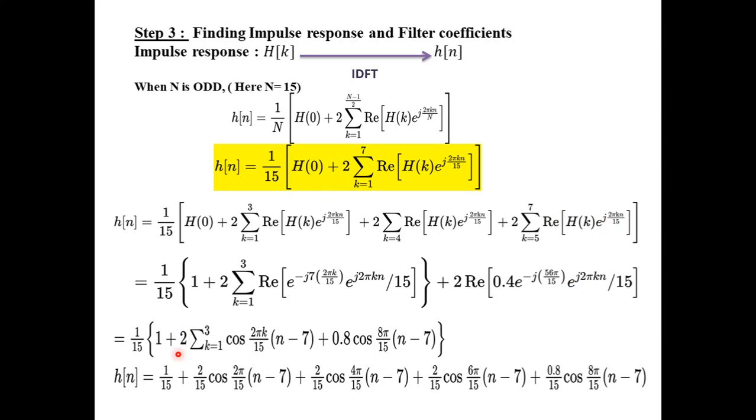Now, 1 by 15, 2, k equal to 1 to 3. So this can be written as, you can take n minus 7 as common over here, and the 2πk by 15 into n minus 7 will be taken. A real part of that is nothing but cos. And similarly, 0.4 e power j, you can take 8π by 15 as common and you will be getting n minus 7. And the real part of this is nothing but cos of 8π by 15 into n minus 7.